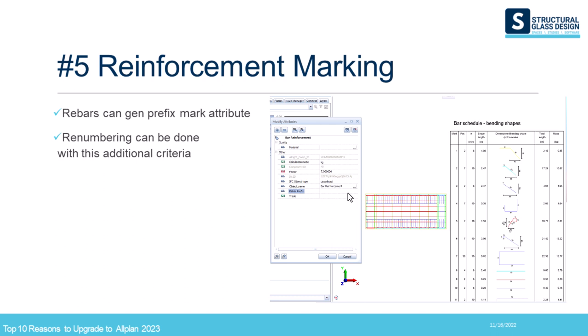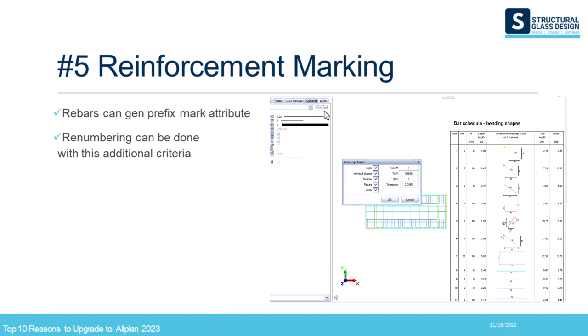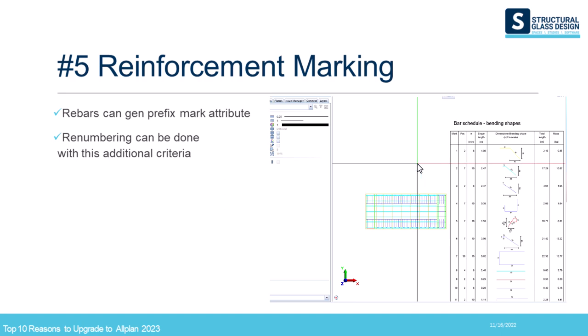Number 5. You can now add a prefix attribute to reinforcement in order to insert another differentiating criterion aside from quality, shape, diameter and layer. Renumbering will only combine marks with the same prefix series.